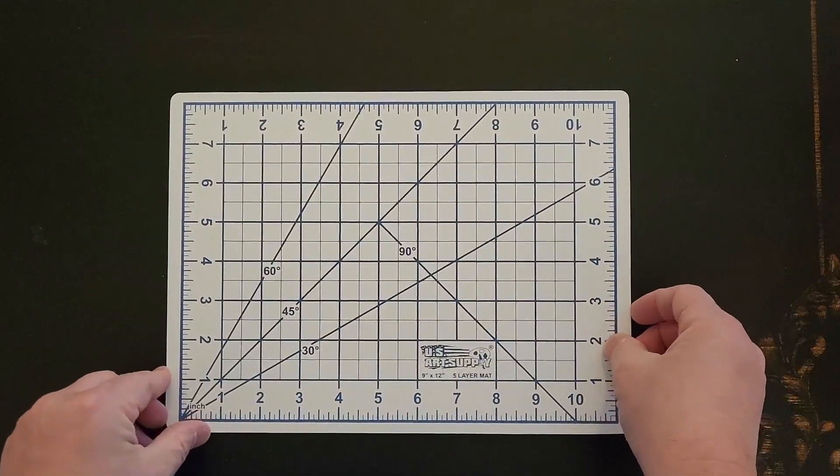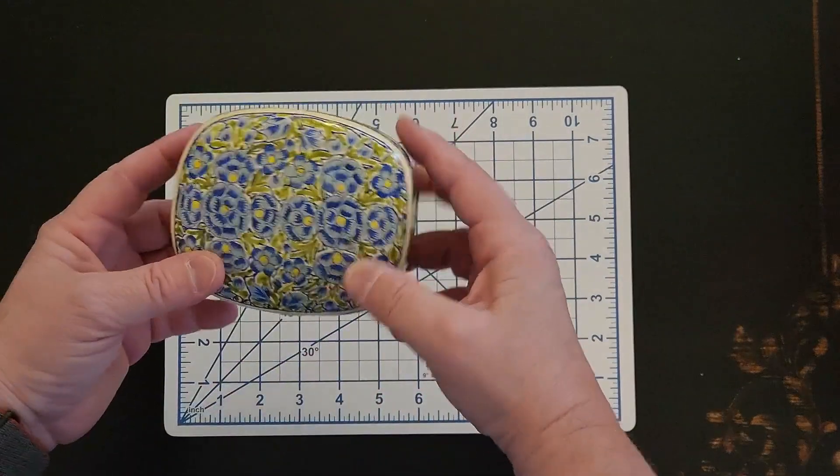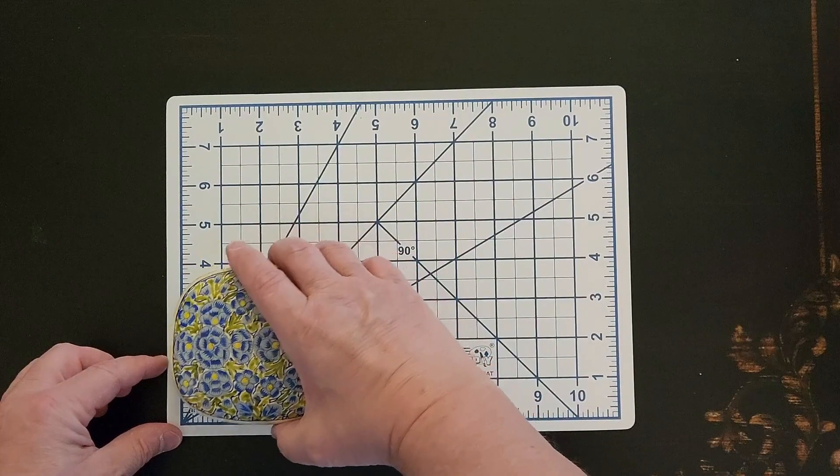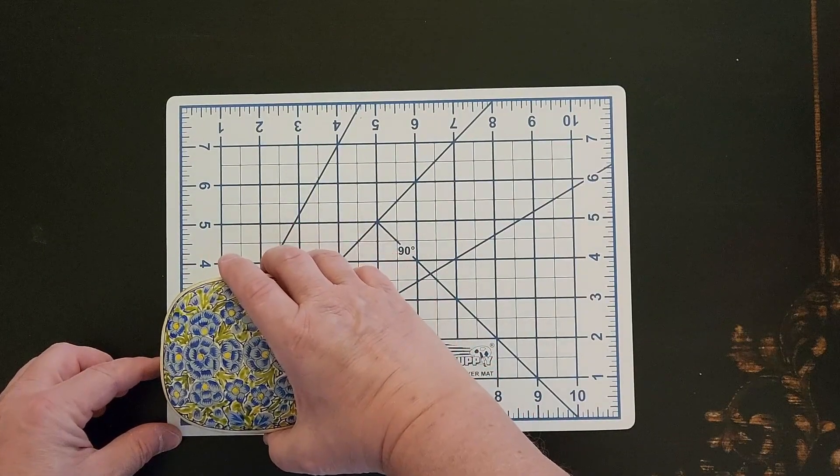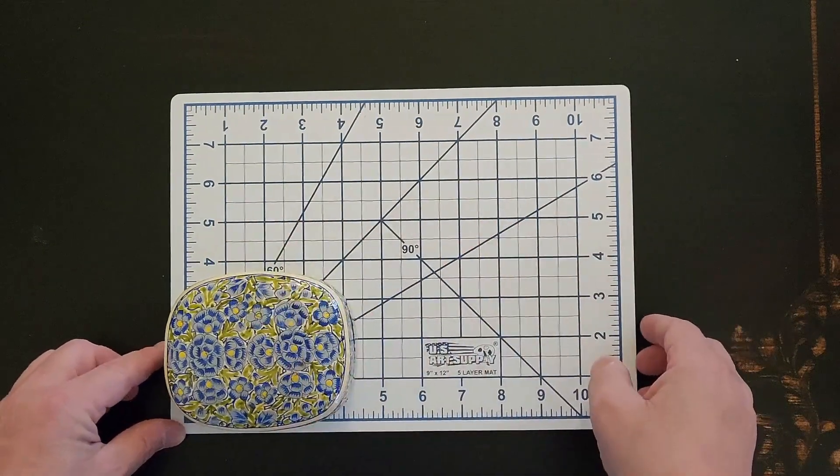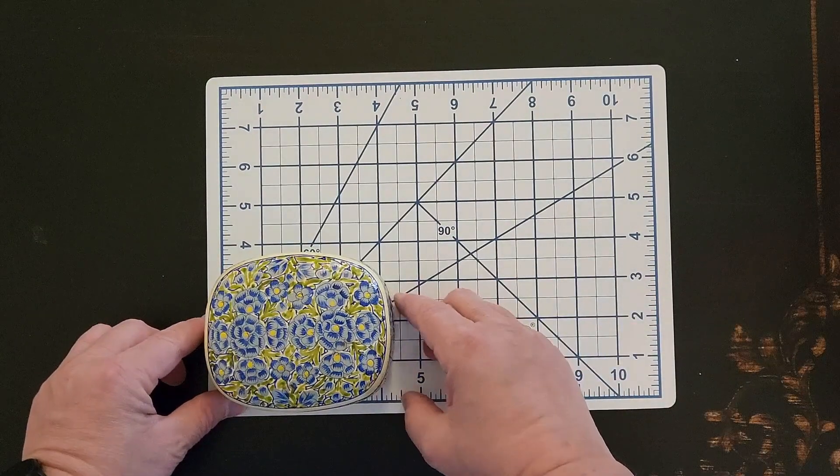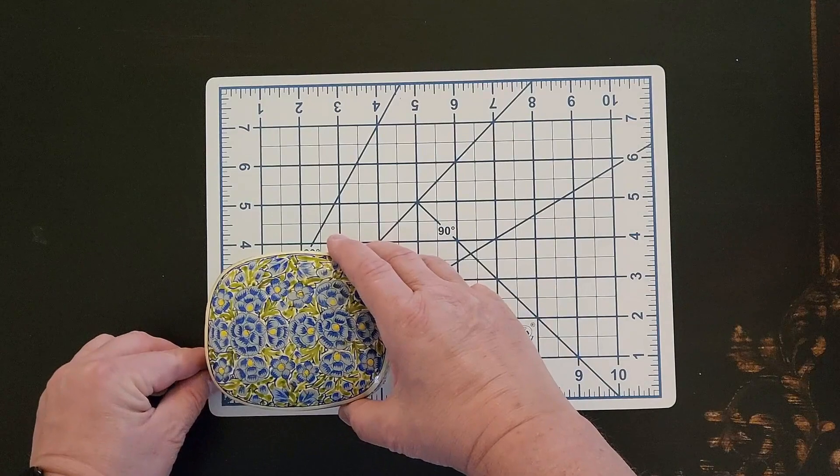So let me show you what I can do with it. Let's say that I'm going to sell this little box. When I put this in the corner and I line it up on there, I'm going to have a very good idea and be able to show people the approximate size of it.